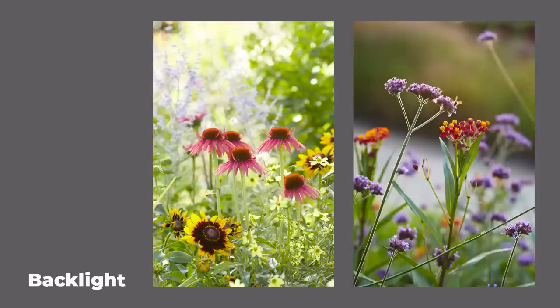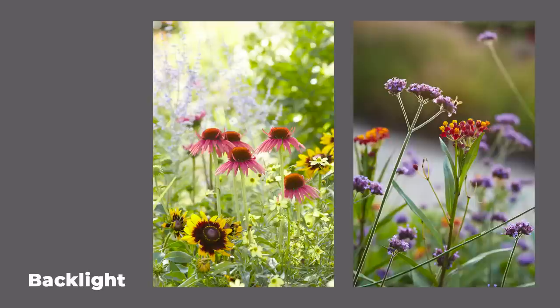Here are two of my favorite backlit images from the magazine. The coneflowers on the left were shot early in the morning — there was a slight overcast, so the light was diffused but still had direction. You can see the highlights on top of the coneflowers and the background is soft and blown out. On the right, the verbena and butterfly weed shot late in the day shows how the highlight on the stem gives separation from the background — that's the type of light you want to look for.